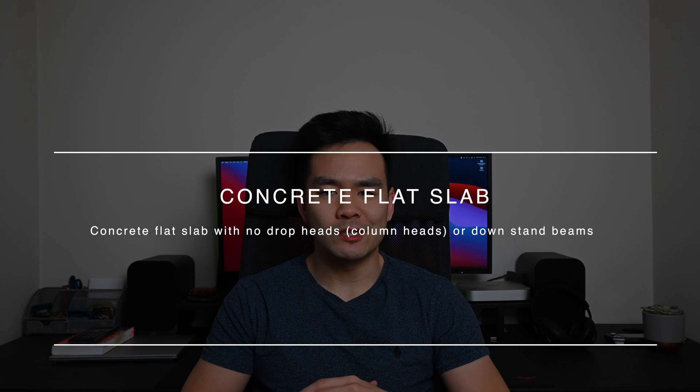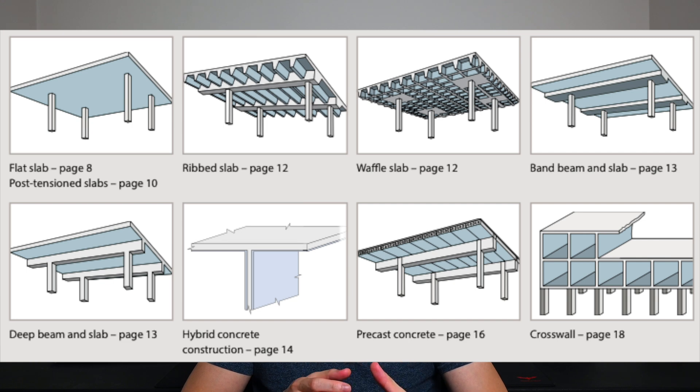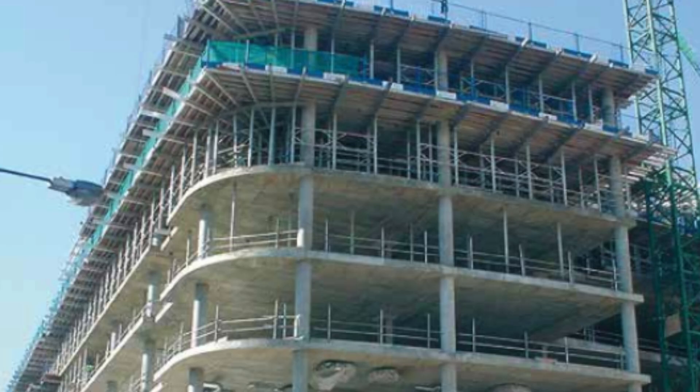Probably the most common concrete frame slab is going to be a flat slab. Compared to a traditional two-way spanning slab with drop beams, a flat slab is so much quicker to construct that contractors will often pay more in terms of volume of concrete, because the speed in erecting the formwork is so much faster that it offsets the additional cost for the extra concrete. It's very common in high-rise buildings when you're repeating the same slab over and over again, so you're just reusing the formwork.